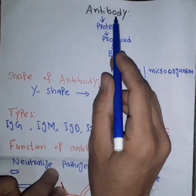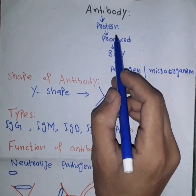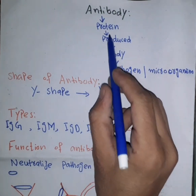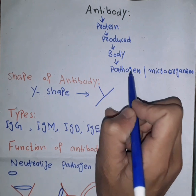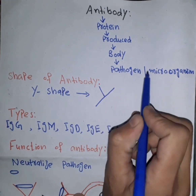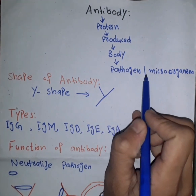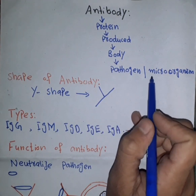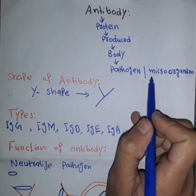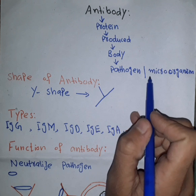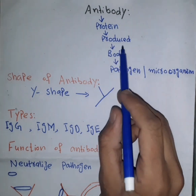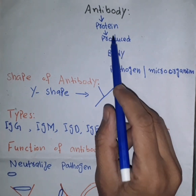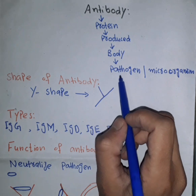The topic is the antibody. Antibody is a protein produced by the body against pathogens or microorganisms. If you have a body, you can have a particular protein, and if you have a protein, you can have an antibody.